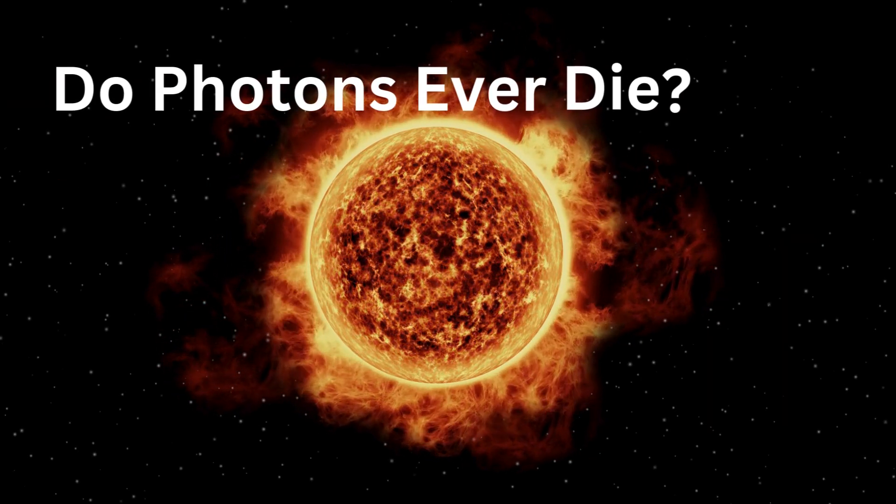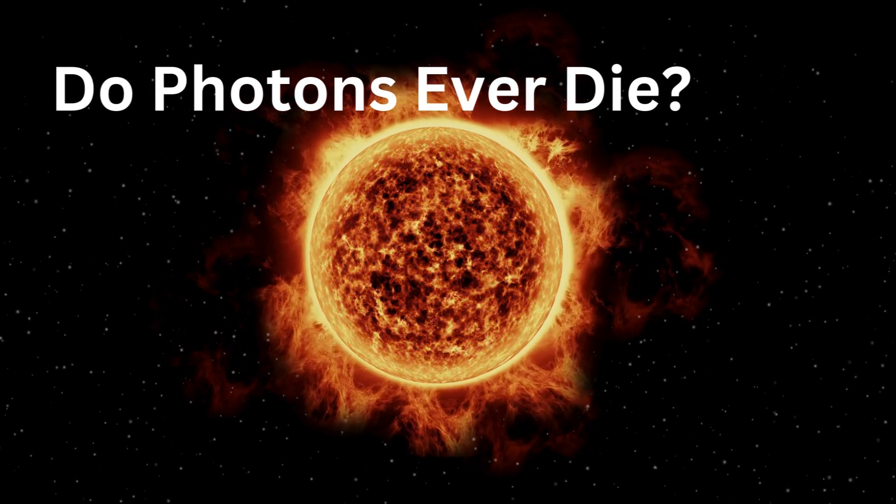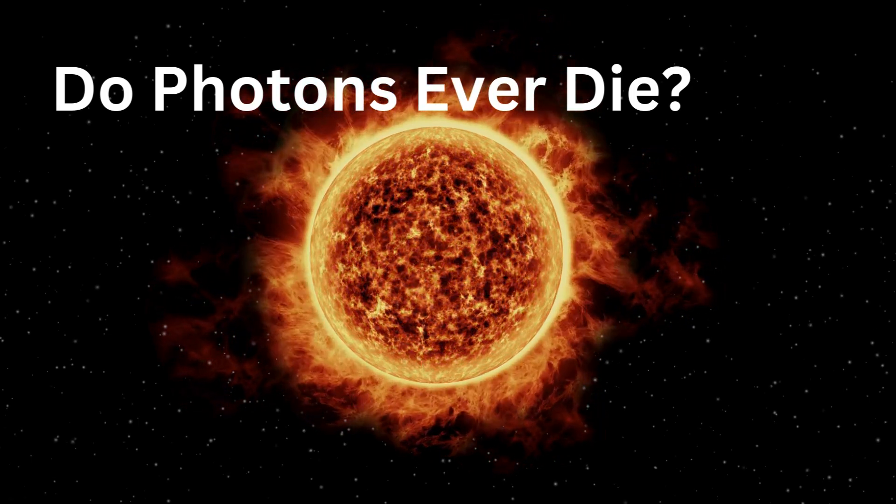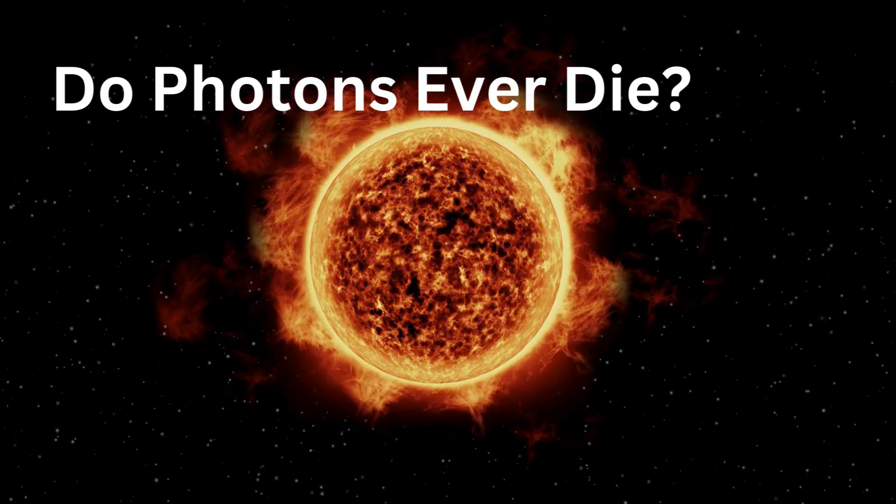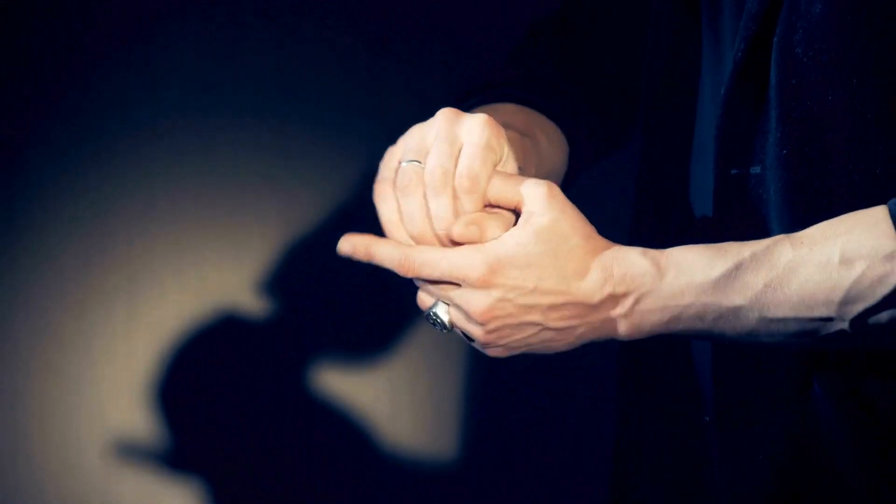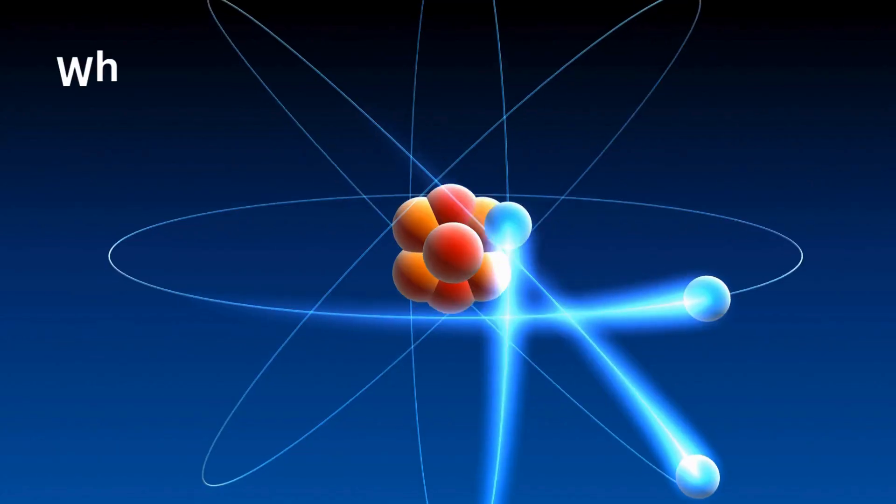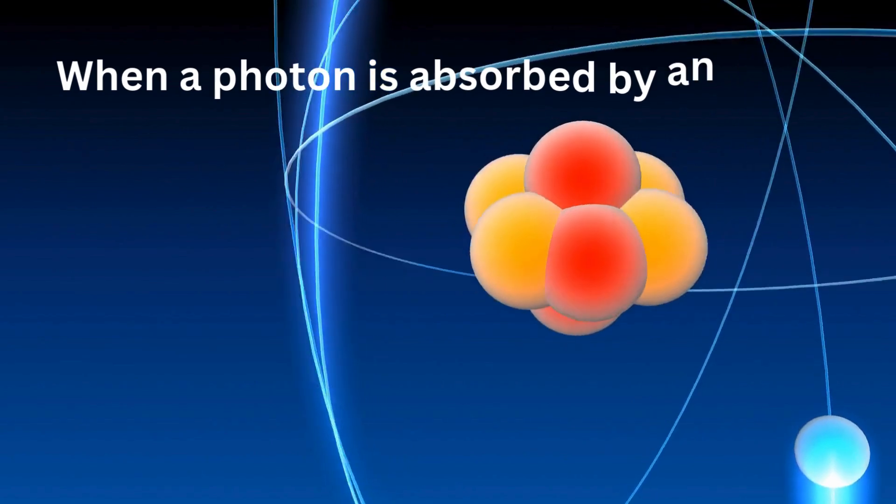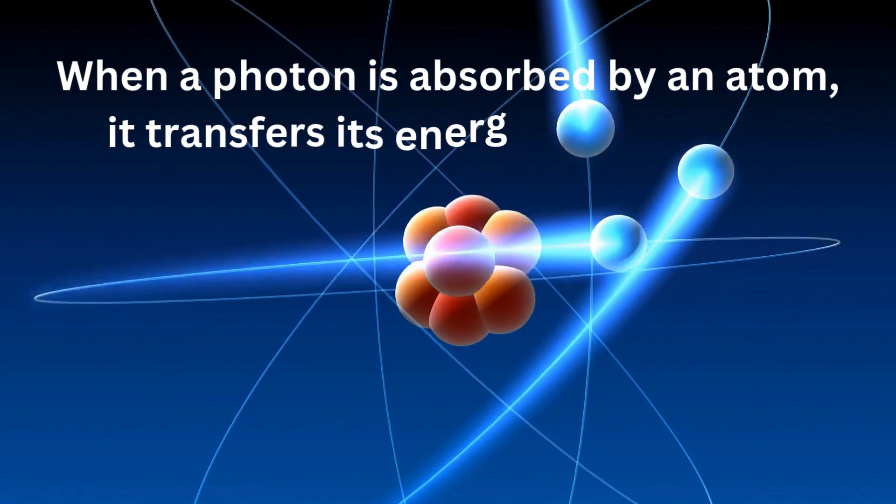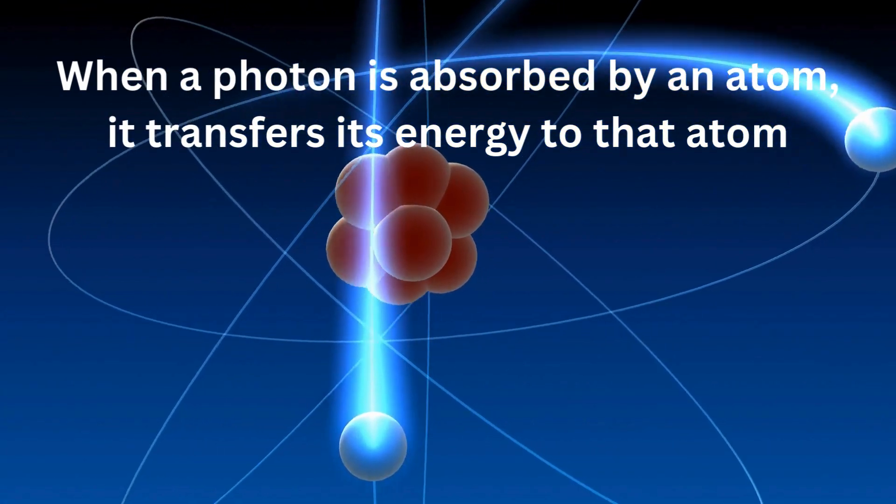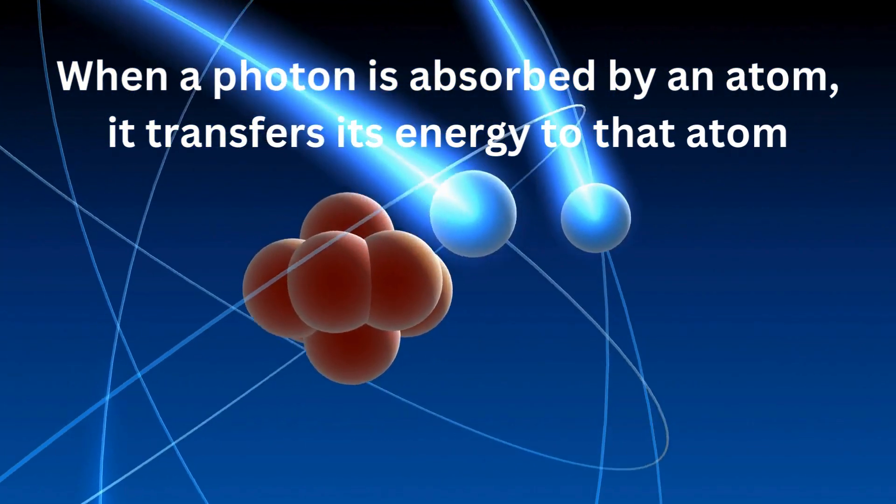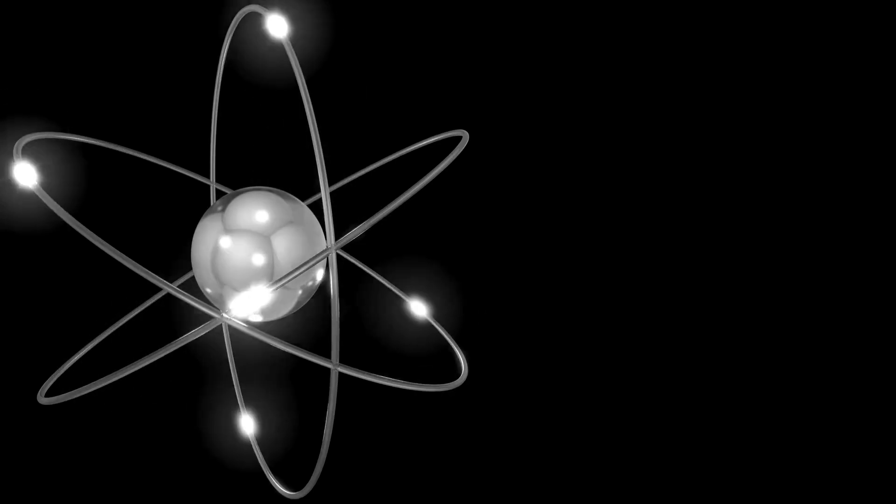Do photons ever die? Now here's a fascinating question. Do photons ever die? The answer is a bit complex. While photons don't have a lifespan like living organisms, they can interact with matter in ways that lead to their disappearance. When a photon is absorbed by an atom, it transfers its energy to that atom, often exciting an electron to a higher energy level. In this process, the photon effectively ceases to exist as a free particle.